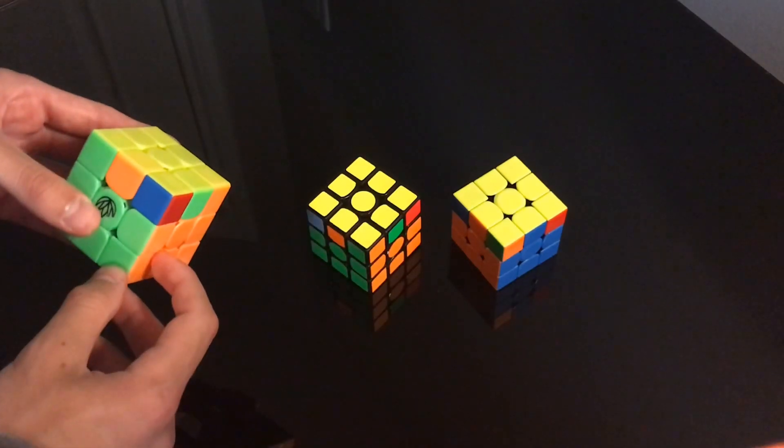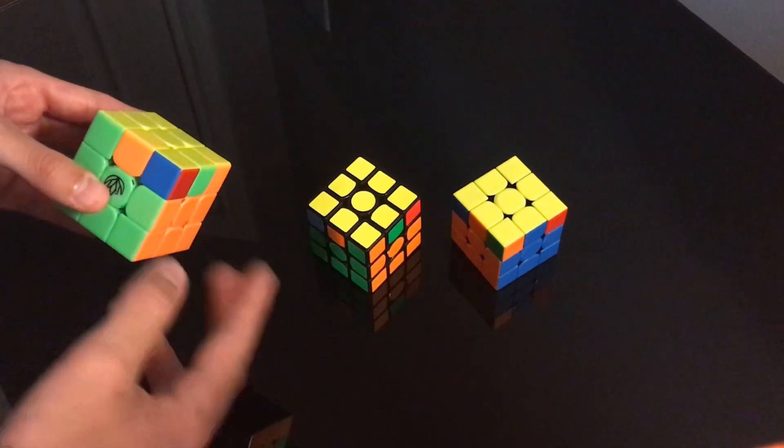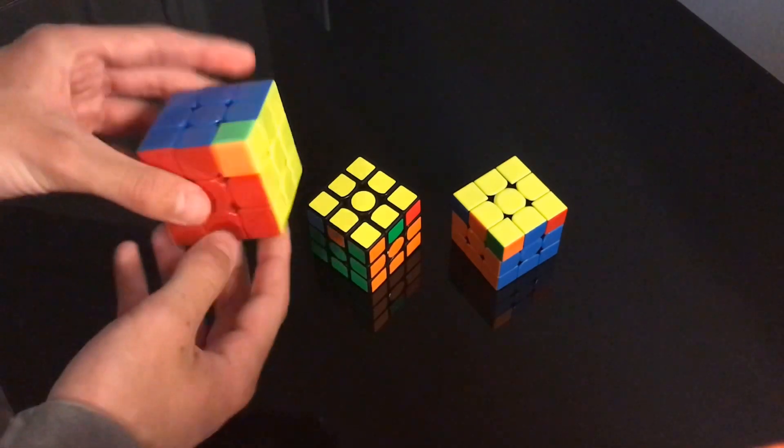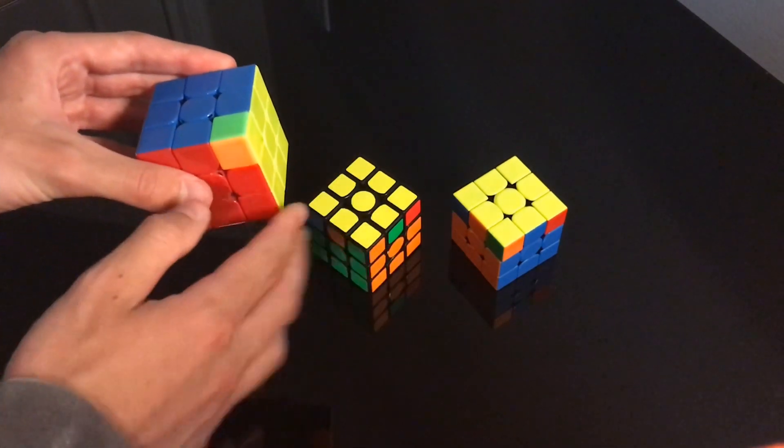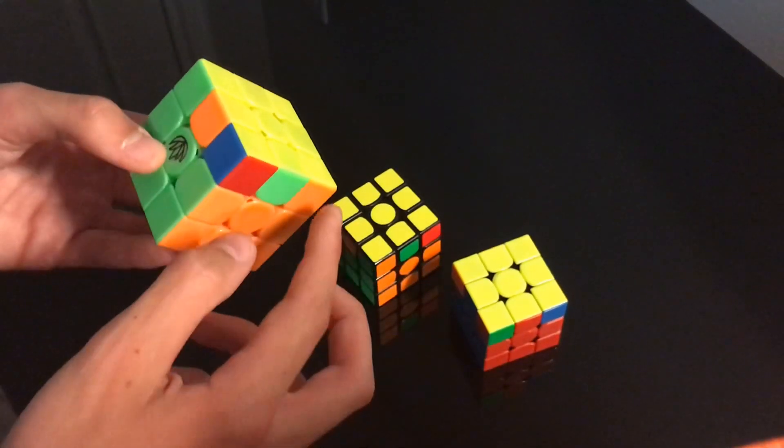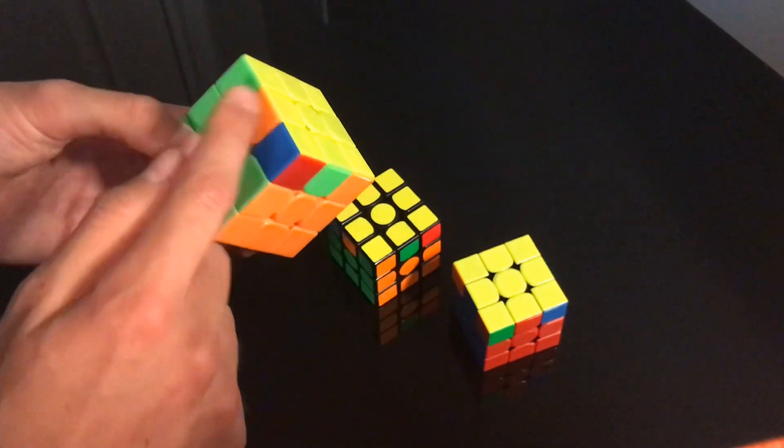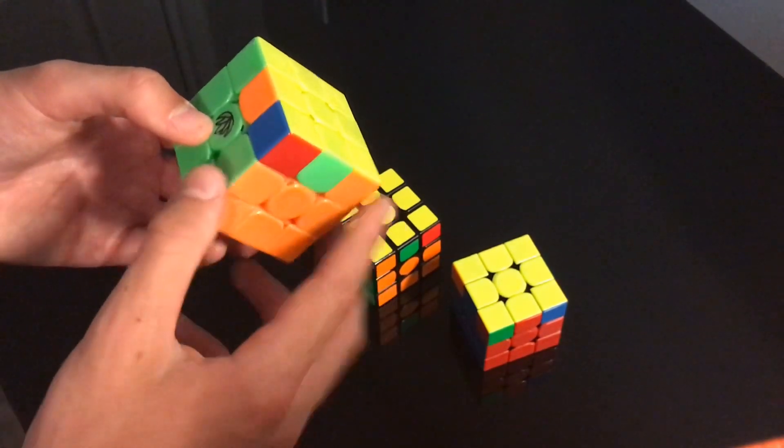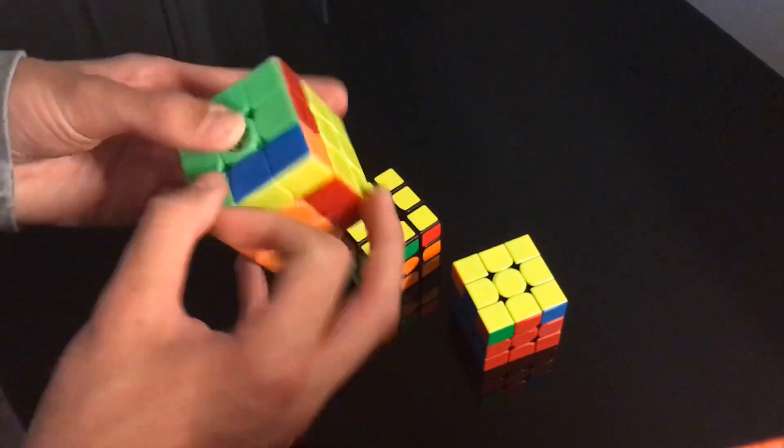So now I'm going to show you guys how to recognize V perms, Y perms, and E perms apart. So obviously this is a Y perm, but if you're not holding it from this angle, how you can recognize it is the very fact that the corner makes a checker pattern right here, as you can see.